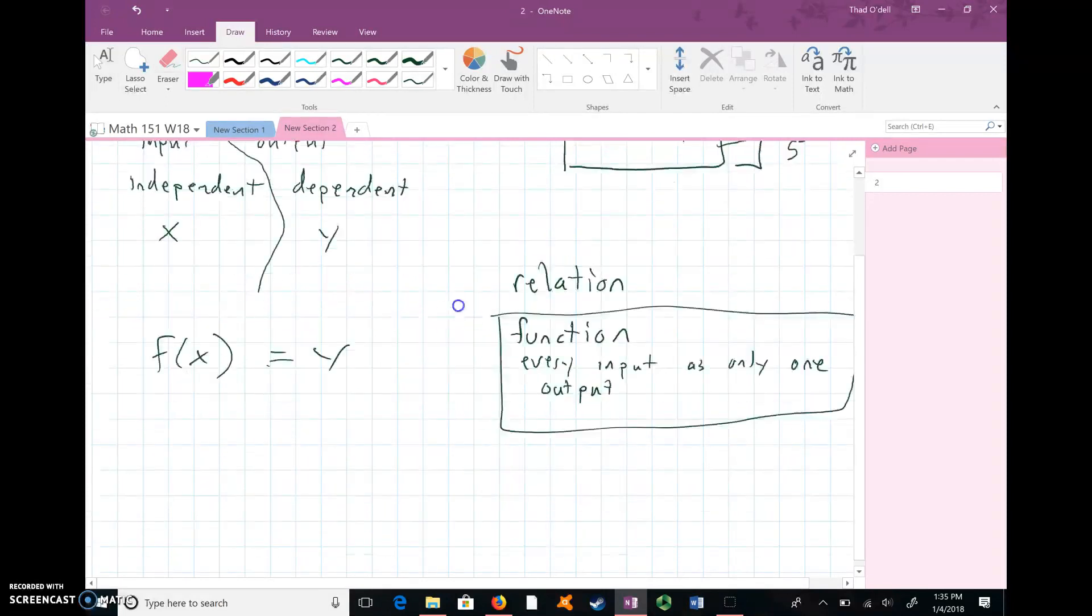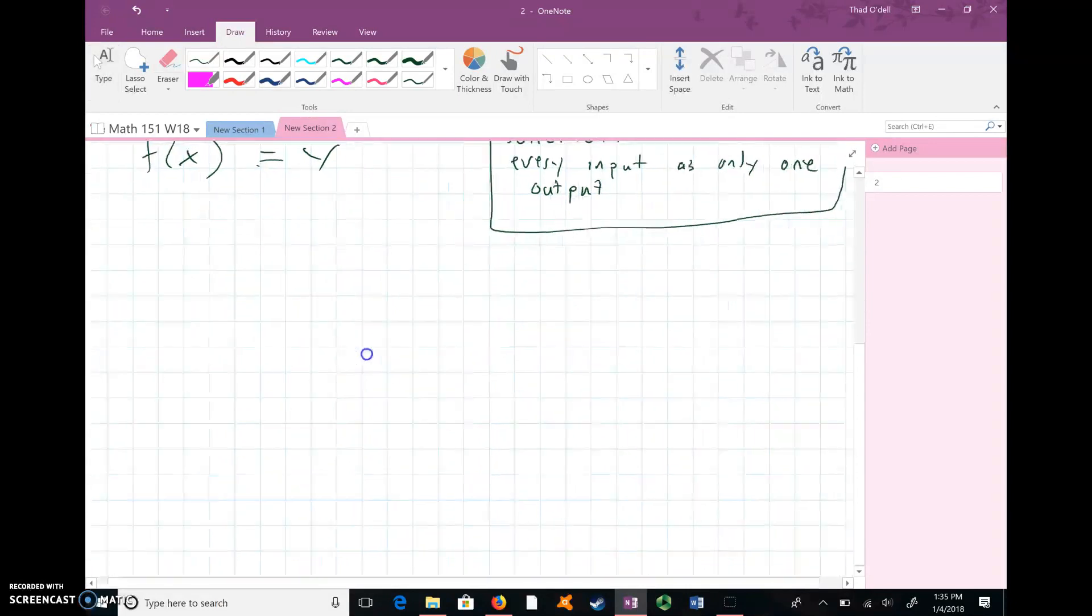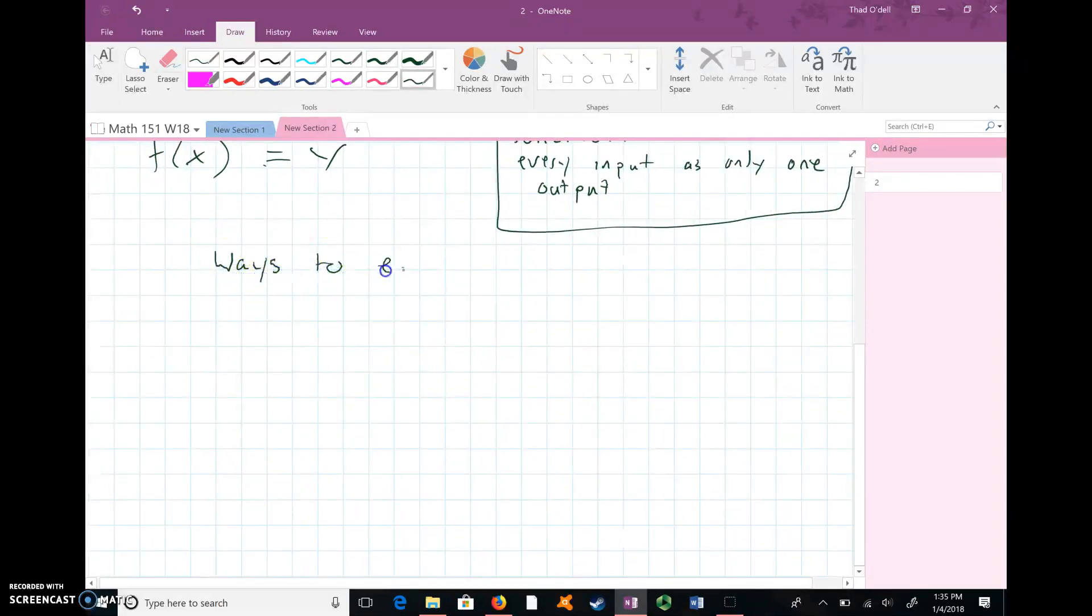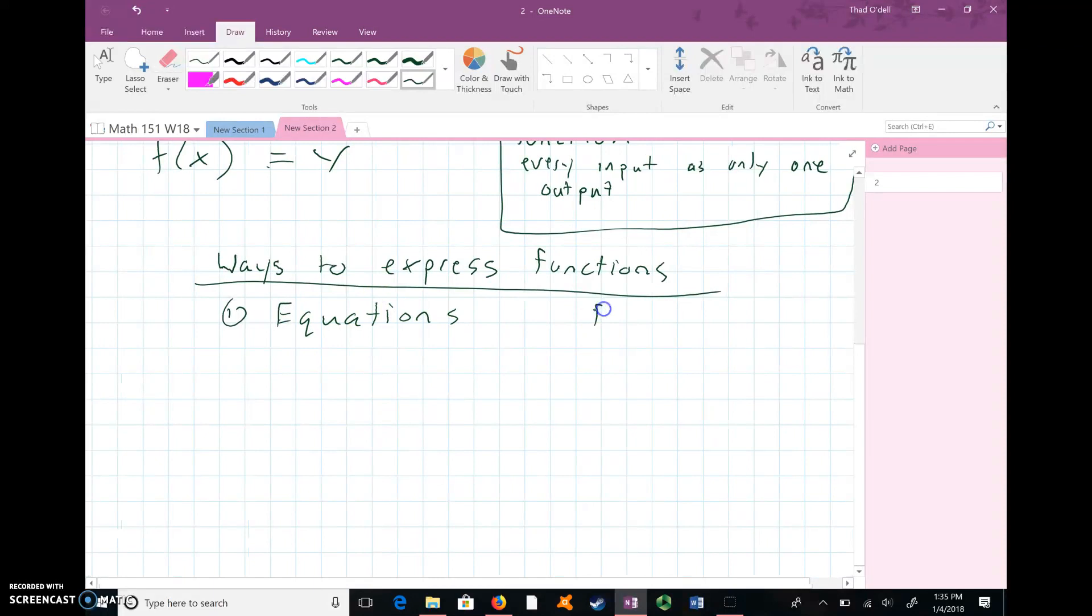We have a lot of different ways to express functions. We can express them using equations, like F(x) equals X squared, or you could write it as Y equals X squared. We can also express it using a graph. That would look maybe something like this if we did that same function.